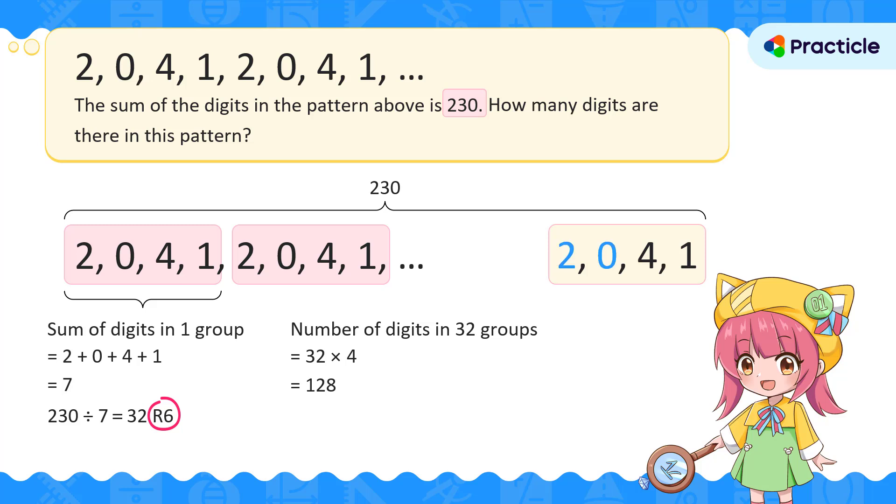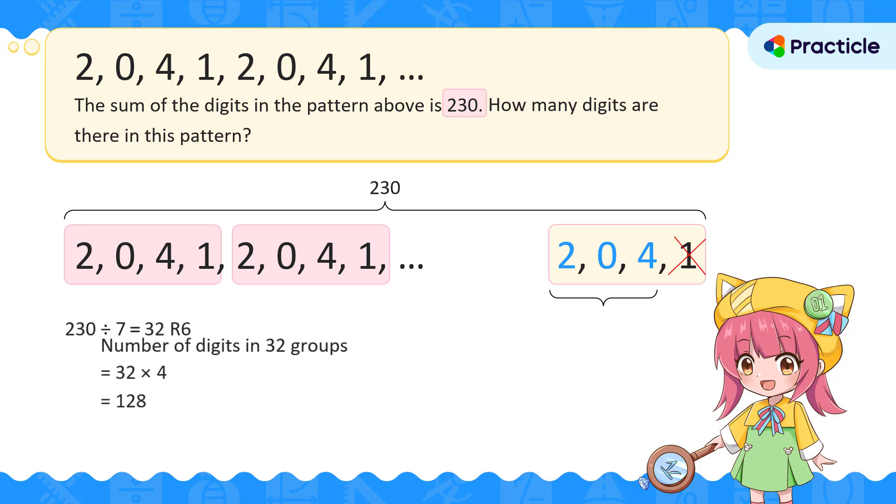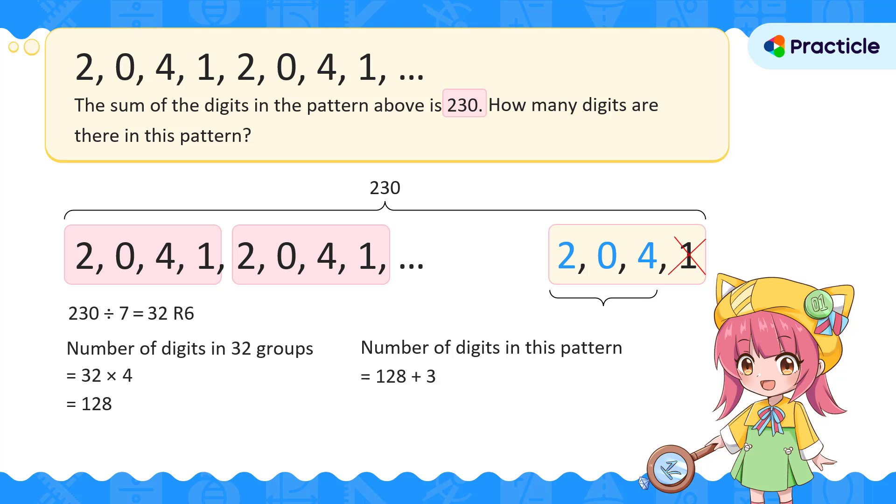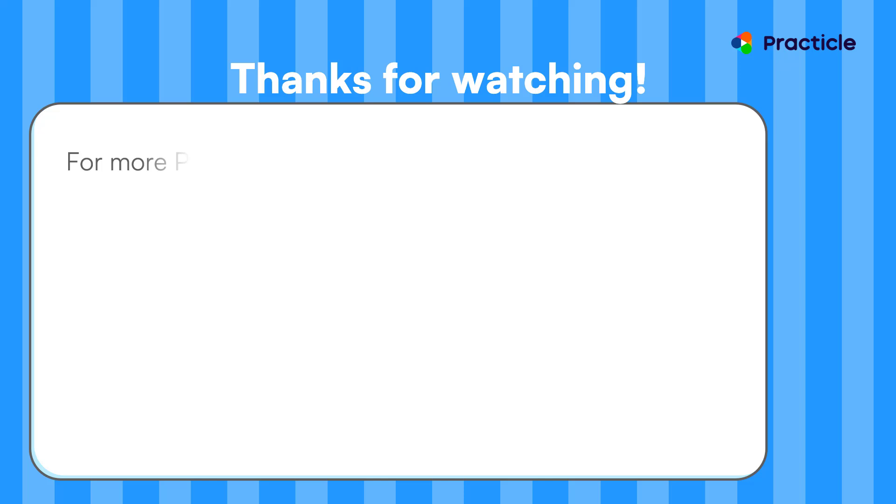2 plus 0 is 2, and 2 plus 4 is 6. Now we know that these 3 digits add up to 6. The number of digits in the pattern that add up to 230 is 128, plus 3. This gives us a final answer of 131. Do you know how to solve number pattern questions now?